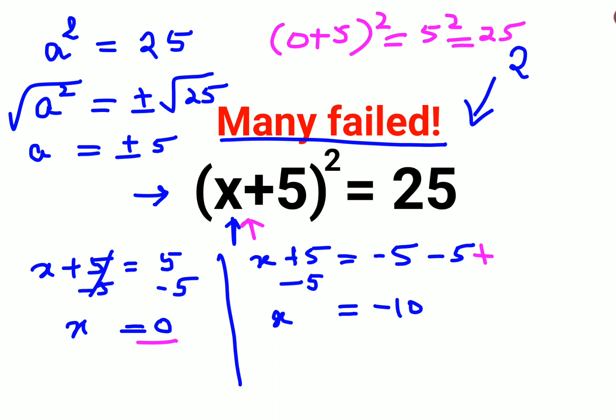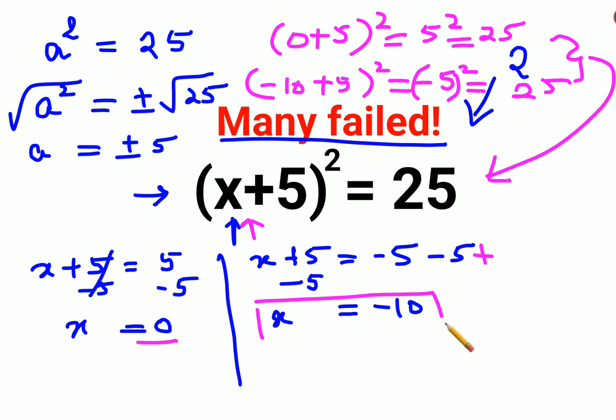Then we have minus 10 plus 5, the whole squared. We're subtracting, and the sign will be of the bigger number, which is minus 5, the whole squared. The square of a negative number will always get you a positive value, which is 25. In both cases I got my RHS back. So the value of x is either minus 10 or 0. That's it for today. I'll see you in the next video.